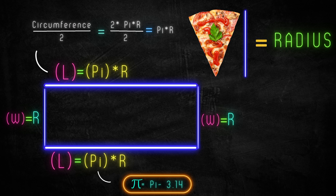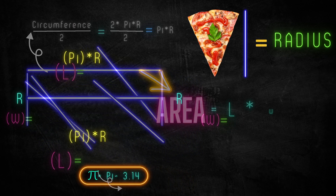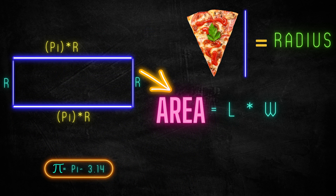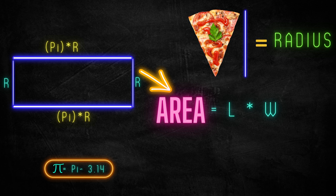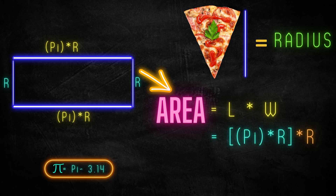The area of the rectangle is equal to length times width. The length is equal to πr and the width is equal to r. Replacing these values, πr multiplied by r gives us finally πr².